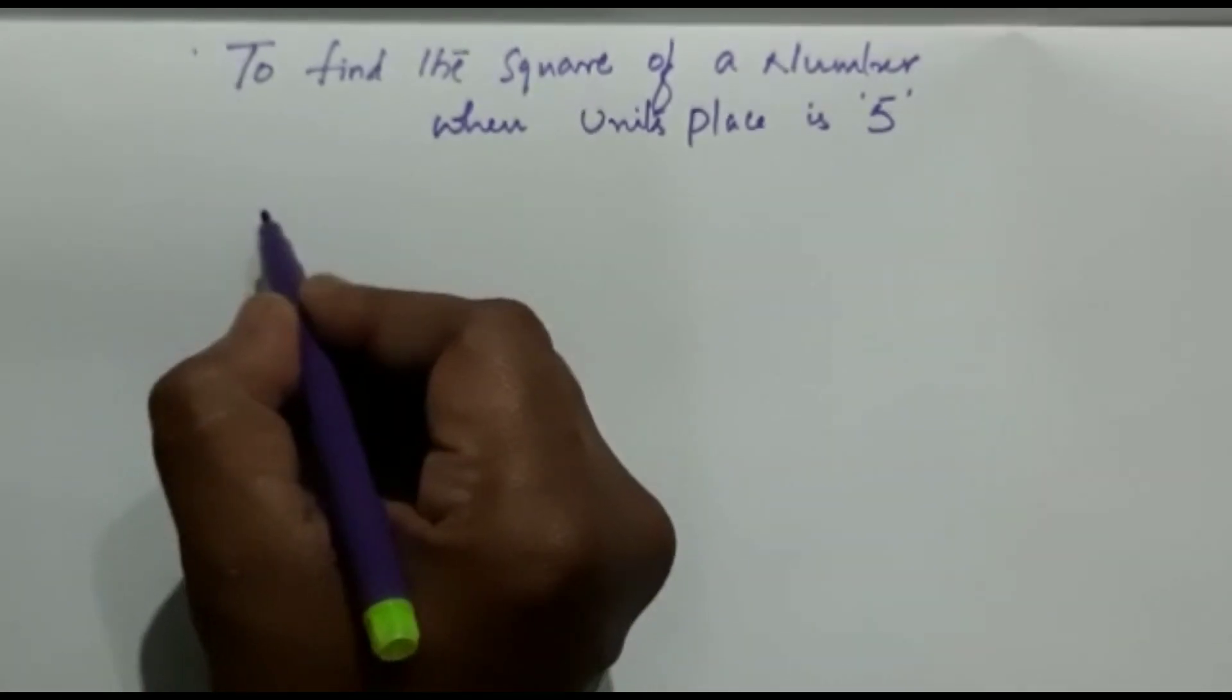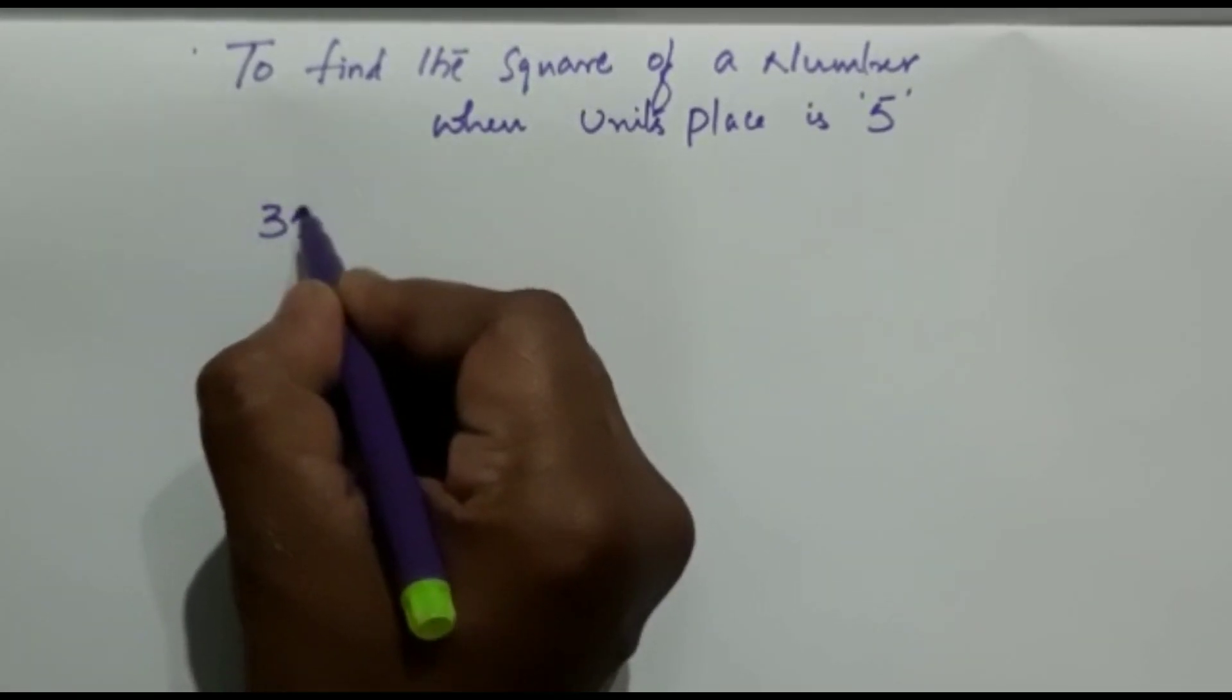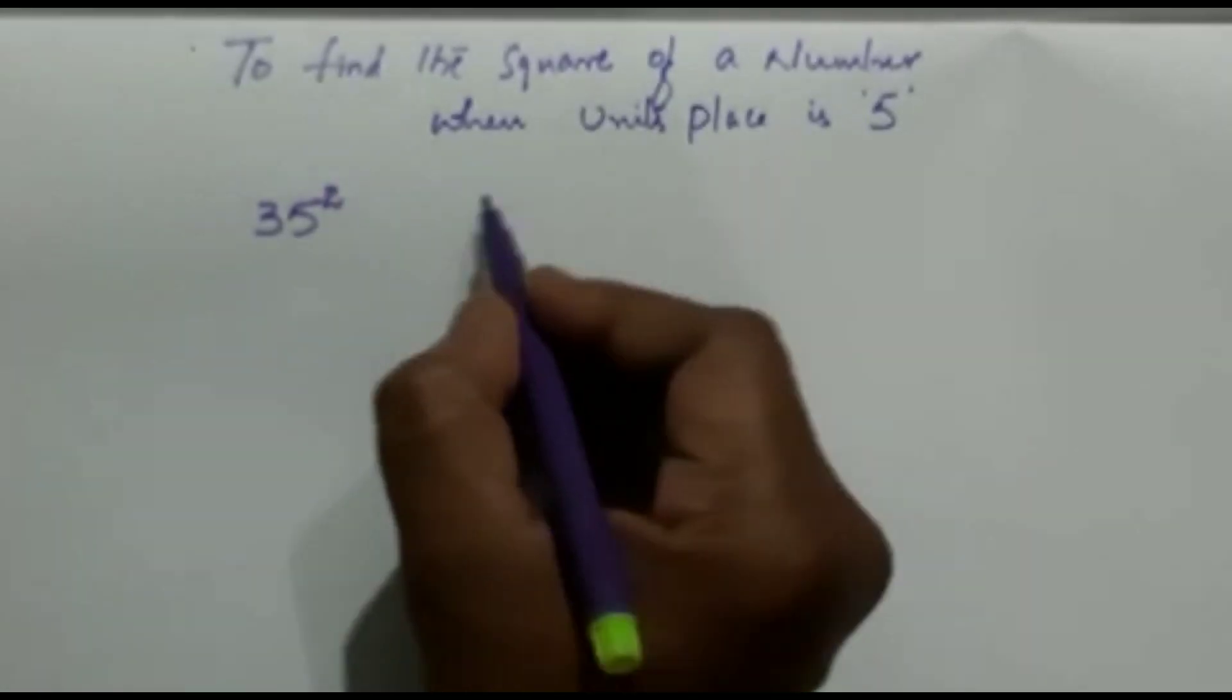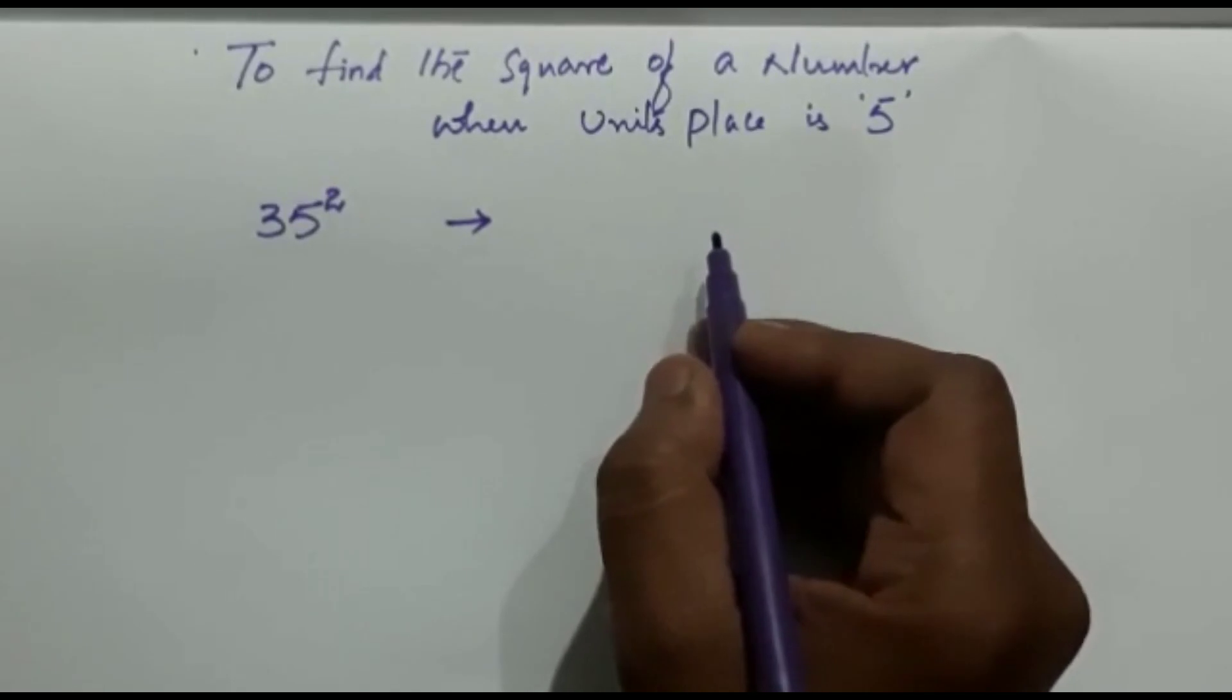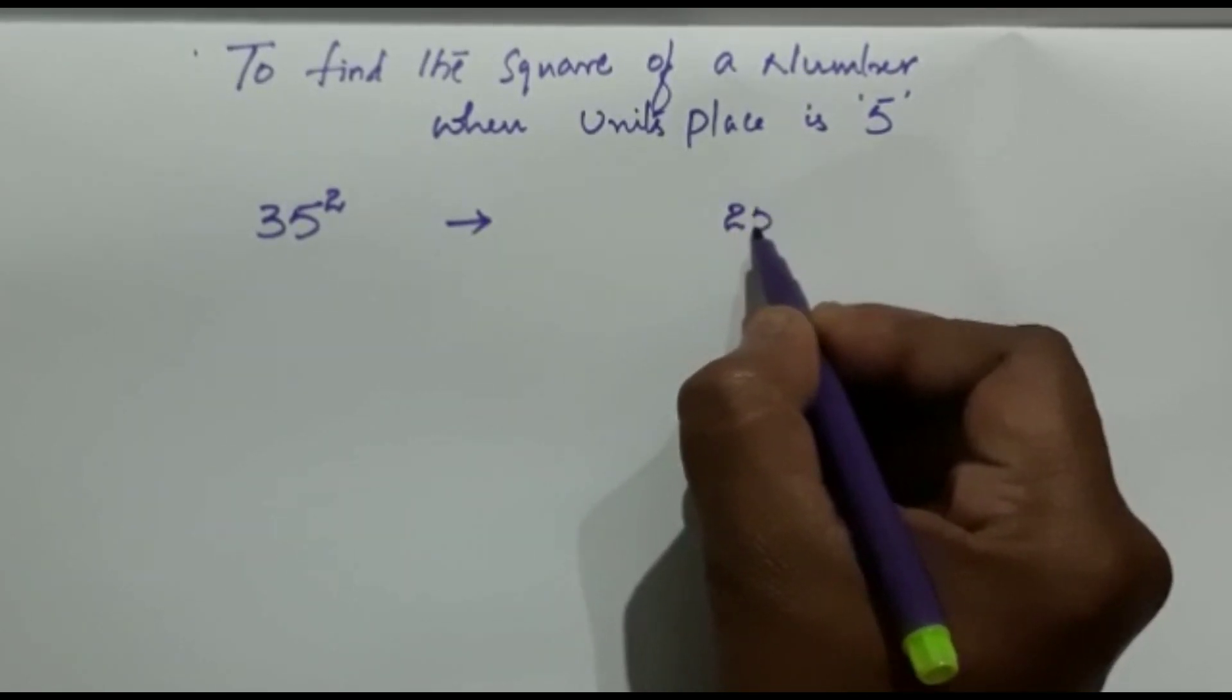Let us have a number, for example 35 squared. Here see, when the unit's place is 5, obviously the last two places of the number will be 25. Keep in mind this.